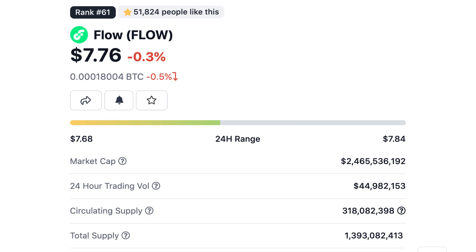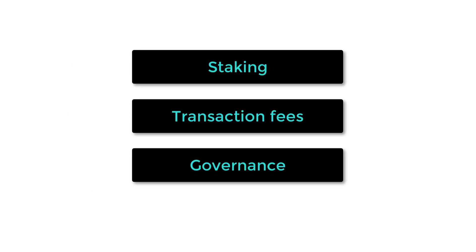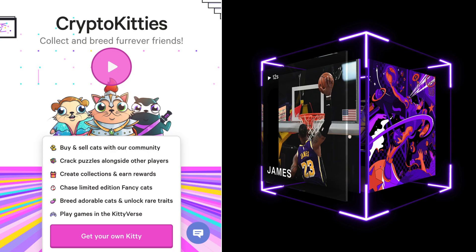Flow is also the name of the native token of the blockchain, with a market cap of $2.5 billion. The Flow token has multiple use cases such as staking for the proof-of-stake mechanism, transaction fees, and governance.